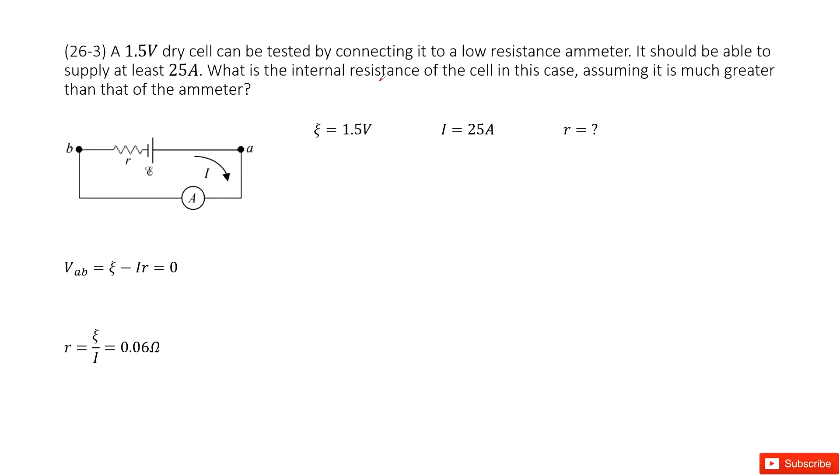So in this case, it tells us this is a low resistance ammeter. Keyword: low resistance. That means even though the current going through the ammeter is still huge, because the resistance is very low, the voltage across the ammeter is zero.